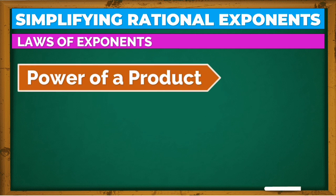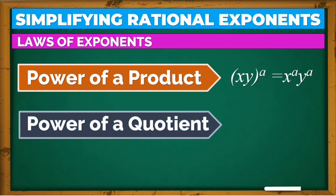The next law is power of a product. In power of a product, we multiply the exponent outside the quantity to the exponent of each term. Just like this: the quantity xy raised to a equals x raised to a times y raised to a. And of course, we also have power of a quotient: x over y raised to a equals x raised to a over y raised to a. We should know and, as much as possible, memorize these laws of exponents so that simplifying rational exponents will be easier.